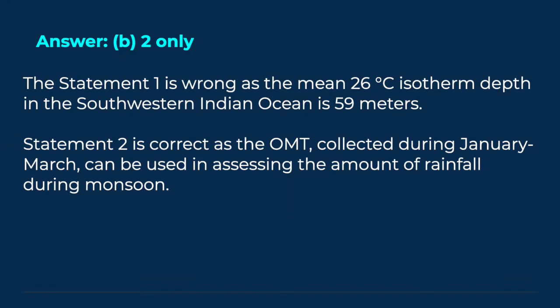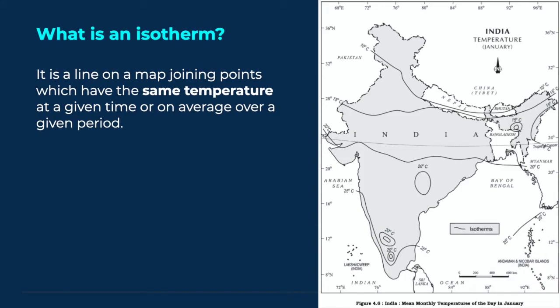Let us discuss what is ocean mean temperature, what is this 26 degree centigrade isotherm, and what are the other methods of predicting the amount of monsoon rainfall. But before that, let's understand what is an isotherm. It is a line on a map joining points which have the same temperature at a given time, or on average over a given period.